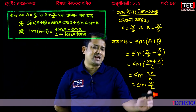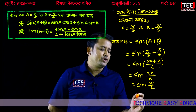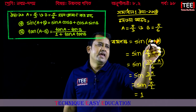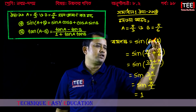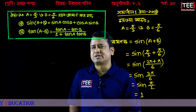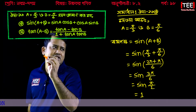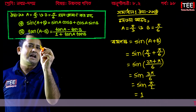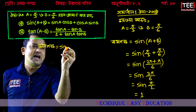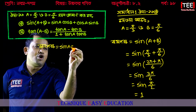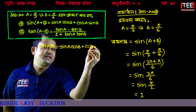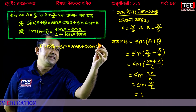Pi means 180, so pi by 2 is 90. Sin(pi by 2) equals 1. We have to calculate pi by 2, and sin(pi by 2) is 1. It equals sin a cos b plus cos a sin b.